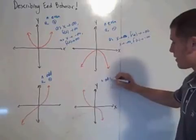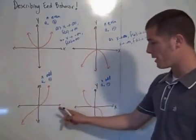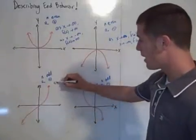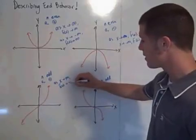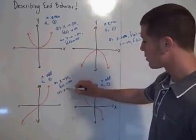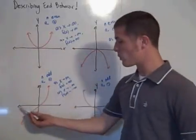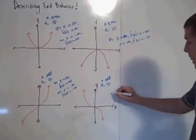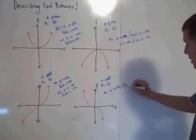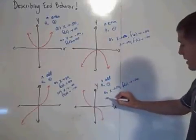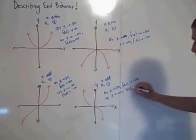These bottom two represent the degree being odd. This one: leading coefficient positive, and here the degree is odd and leading coefficient negative. As x is getting bigger and bigger, y is getting bigger, so as x approaches infinity, f of x approaches infinity. As x gets smaller and smaller, y gets smaller and smaller. Here, as x approaches infinity, f of x approaches negative infinity. And as x goes to negative infinity, y is getting bigger, so f of x approaches infinity.